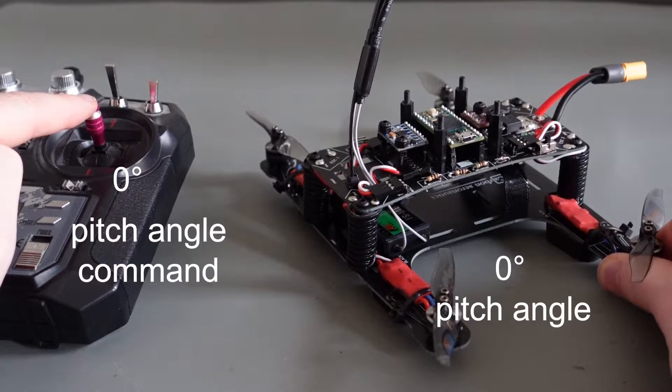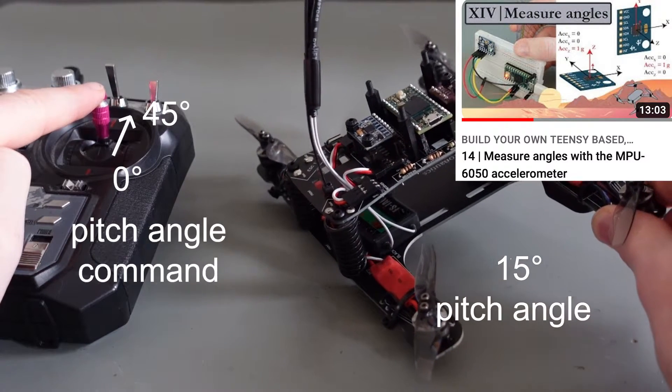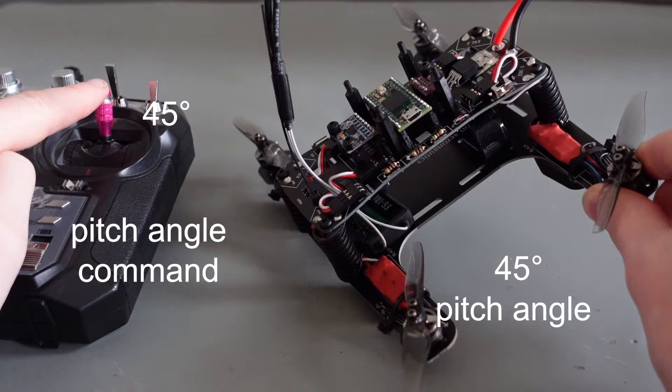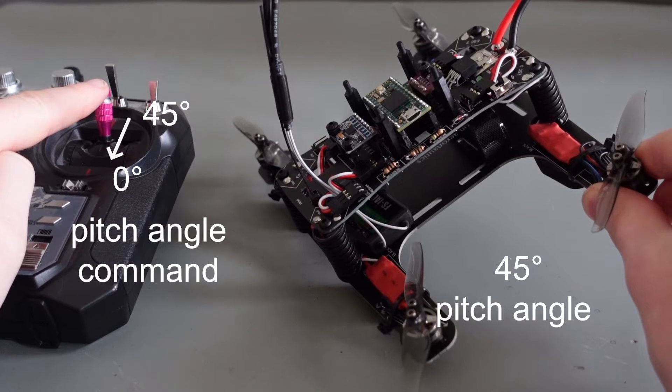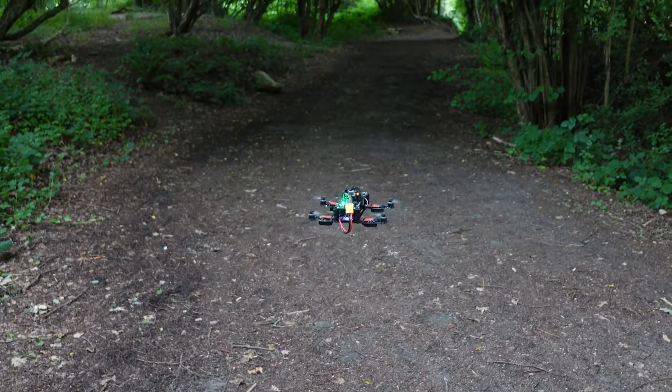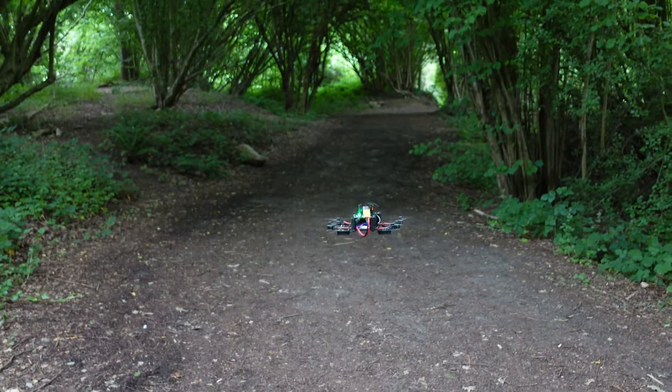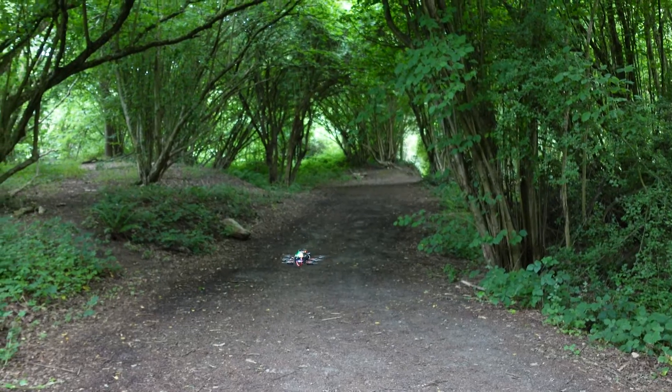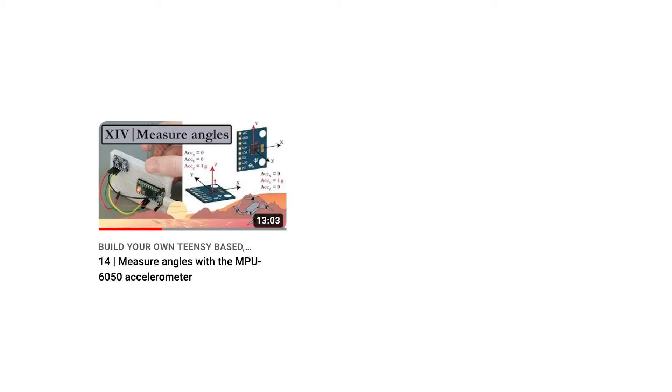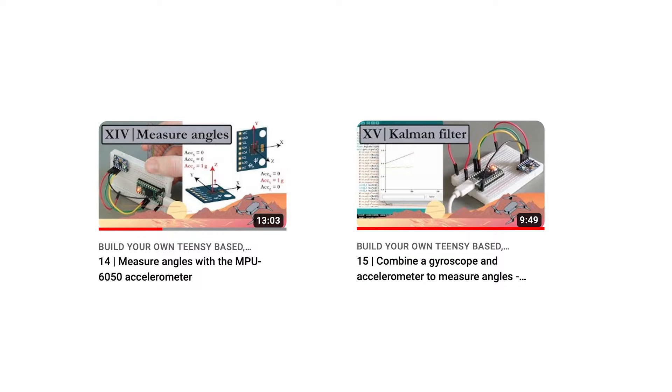In part 14 we already explored the advantages of an angle mode flight controller. When you release a stick of the radio transmitter, the roll and pitch angle commands fall back to 0 degrees, which will automatically stabilize the drone back to a level position. This makes it easier for the pilots to fly the quadcopter. We already explored how you can measure angles in parts 14 and 15.